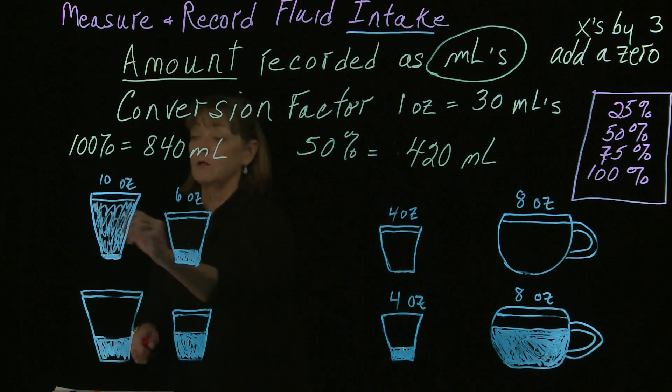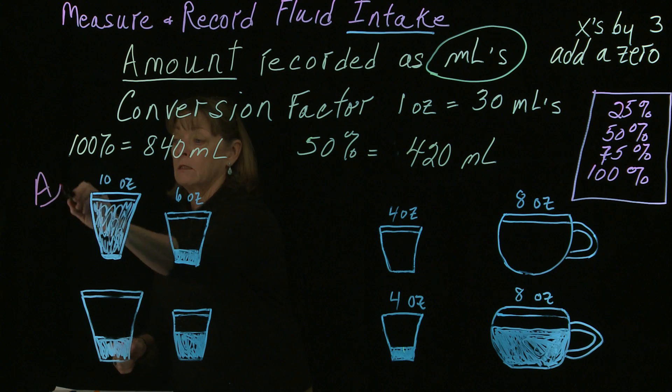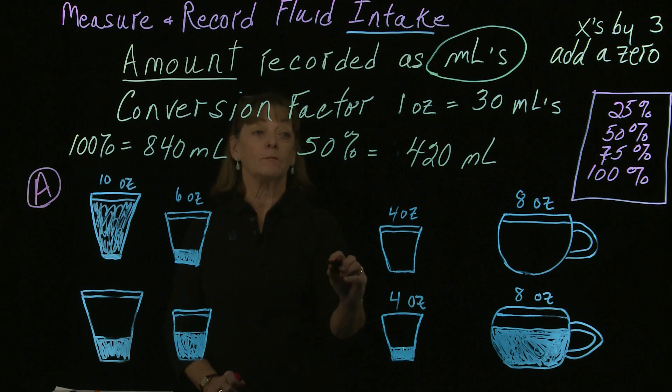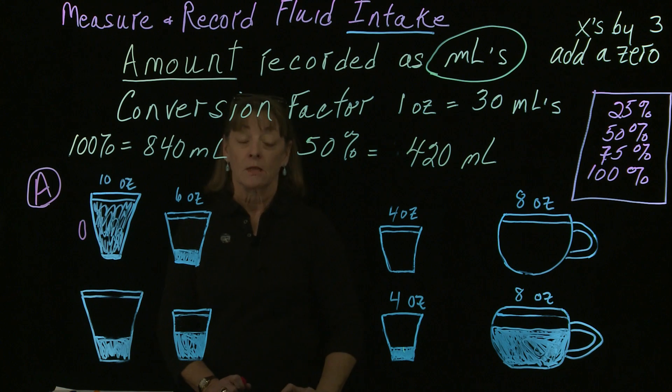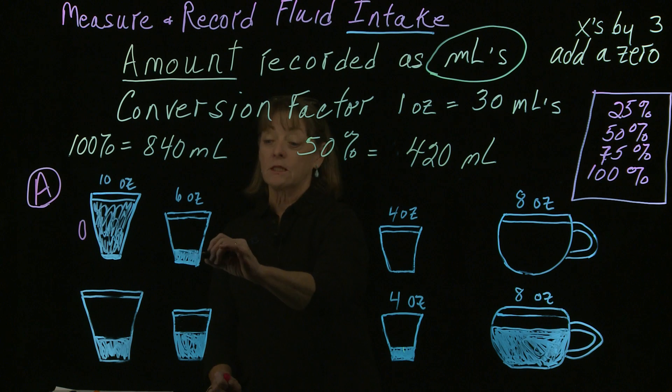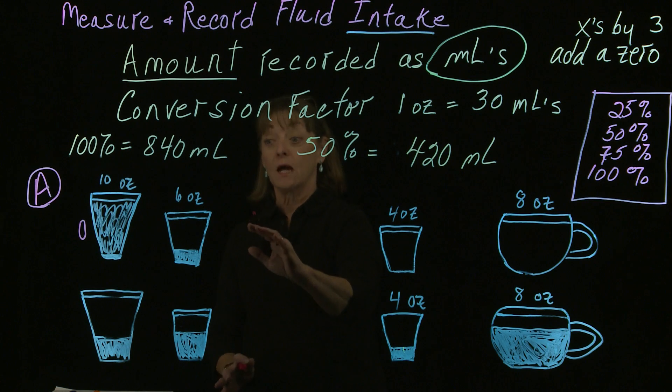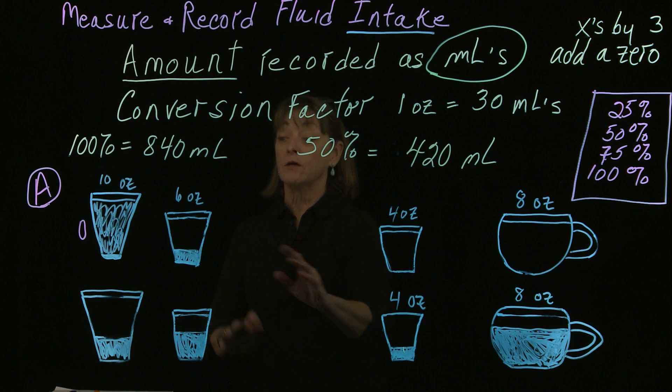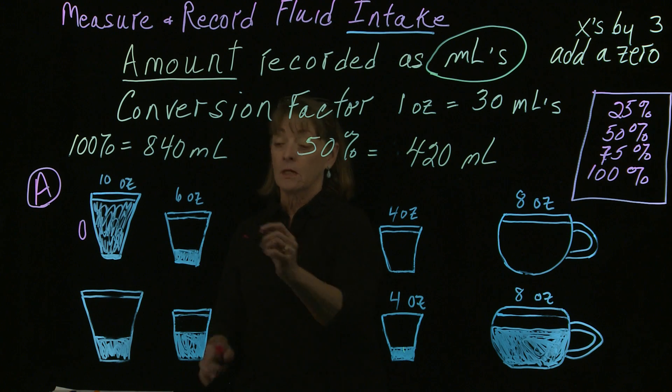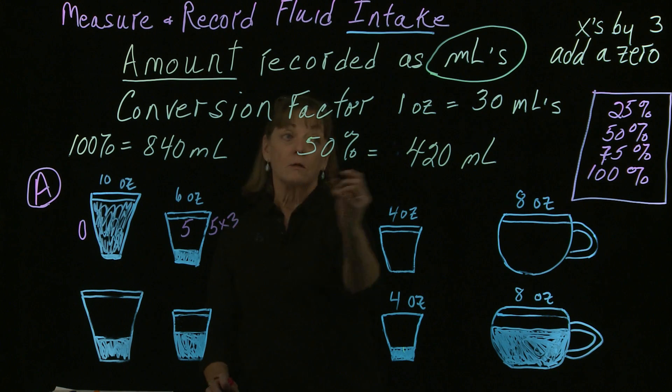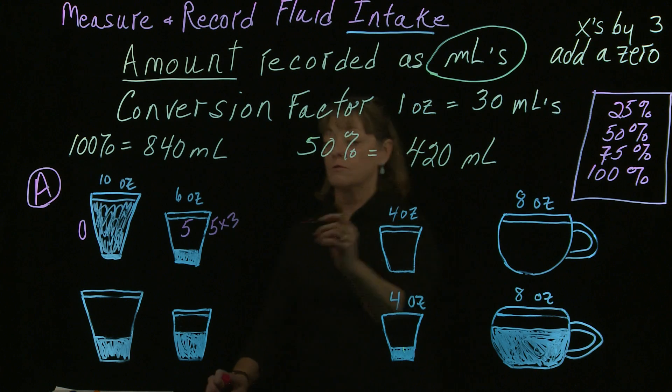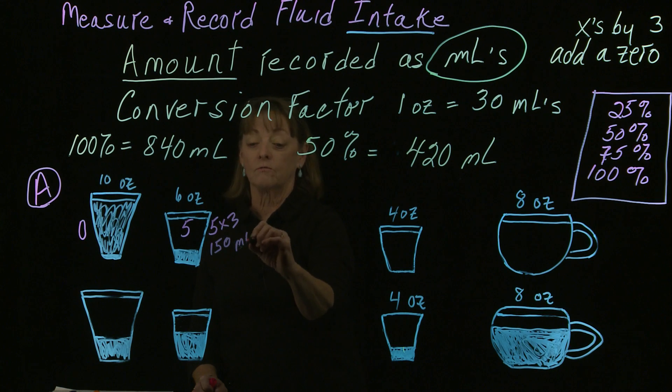If we call this person over here person A, we're going to figure out how much they drank from their meal. They didn't like this very much, so they didn't drink any of it. In this 6 ounce glass, I'm going to say they left behind 1 ounce, because we can only judge this by what they left behind. We're figuring that whatever's not in the glass got inside them. So what got inside them is 5 ounces and there's 1 ounce left. Let's convert this to our mL amount with our mL conversions. So 5 times 3 is 15, add a zero. That's 150 mL.